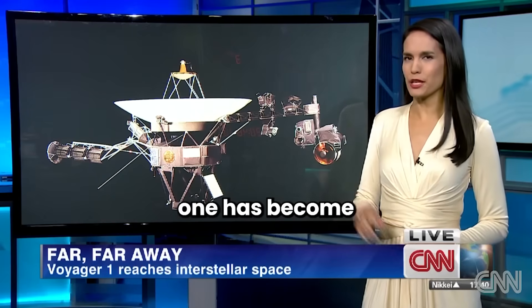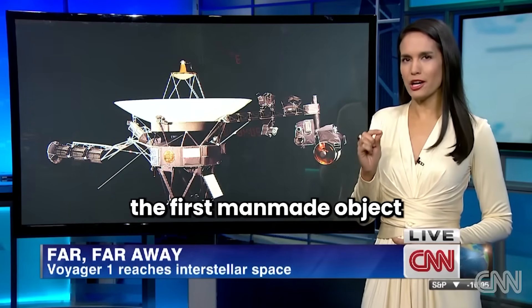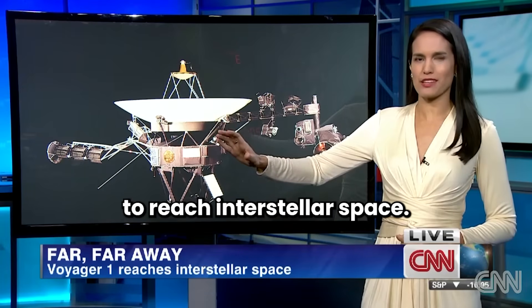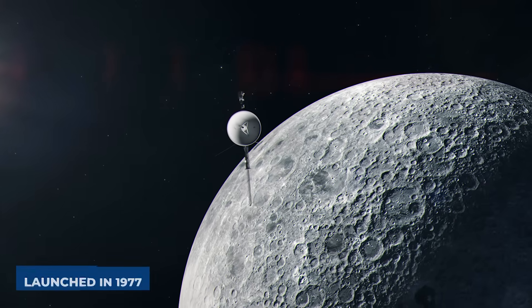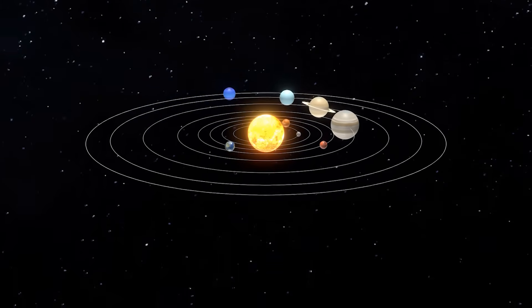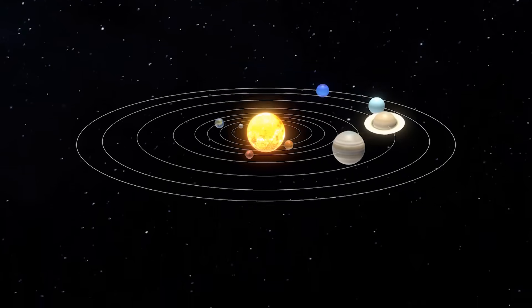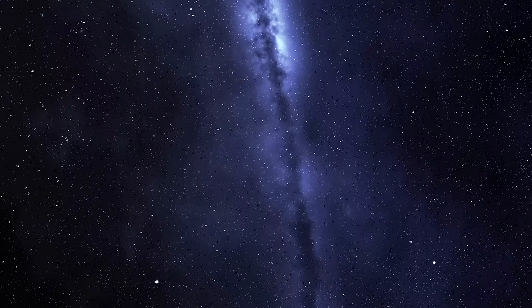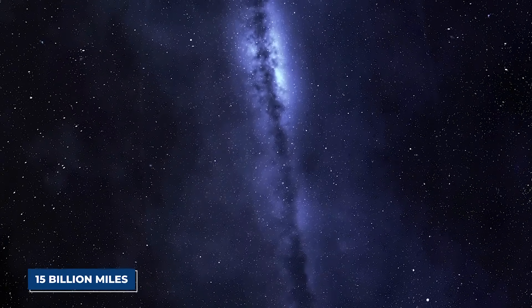NASA says that Voyager 1 has become the first man-made object to reach interstellar space, the cold, dark region between stars. Voyager 1, launched in 1977, has long been humanity's sentinel at the edge of the known solar system, transmitting invaluable data across nearly 15 billion miles of emptiness.